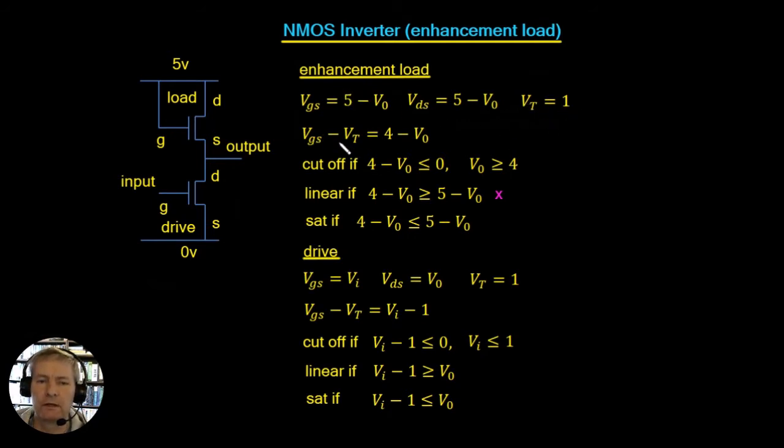Analysing the load transistor: VGS is V_gate minus V_source. The gate is at 5 volts and the source is at the output voltage, so VGS = 5 − Vout. The drain voltage is also 5 volts and the source is Vout, so VDS = 5 − Vout. The threshold voltage for this NMOS device is 1 volt, giving VGS − VT = (5 − Vout) − 1 = 4 − Vout.